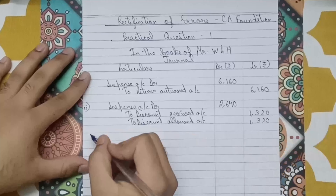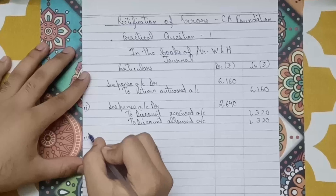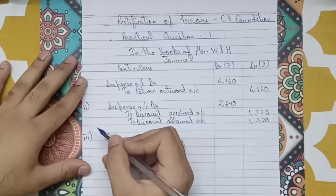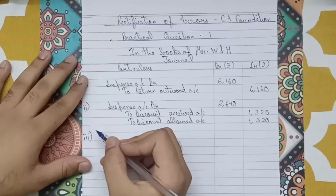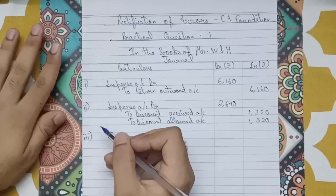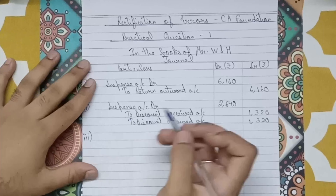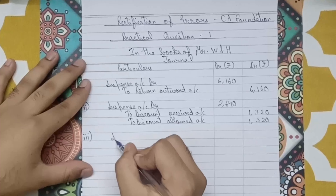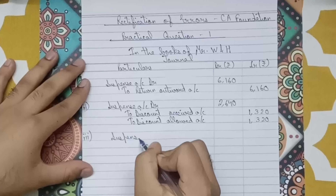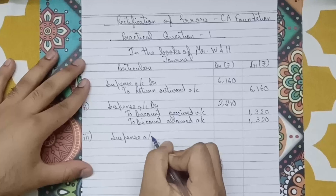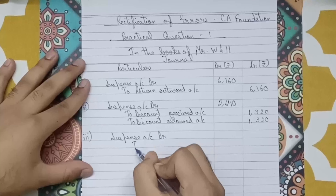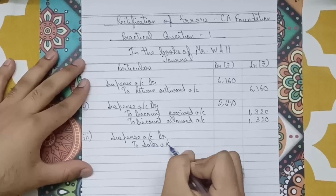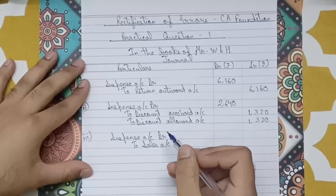Point three: Sales account had been under-added by 10,000 rupees. So the sales account is short by 10,000. The rectification entry will be: Suspense Account debit to Sales Account, amount 10,000.